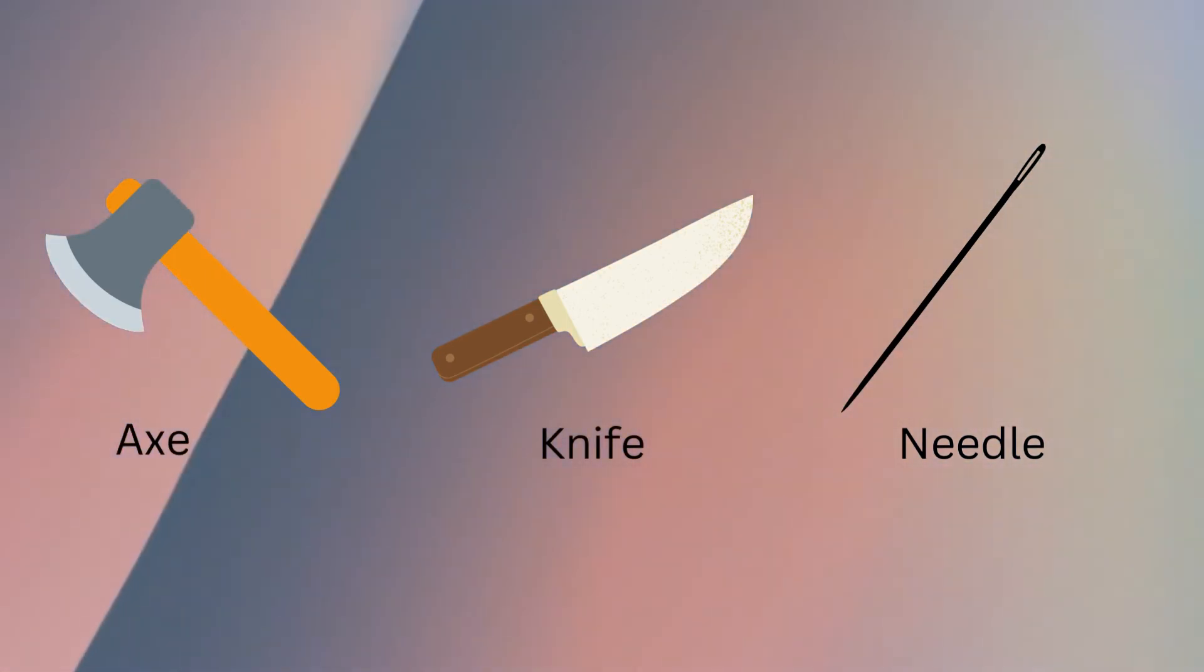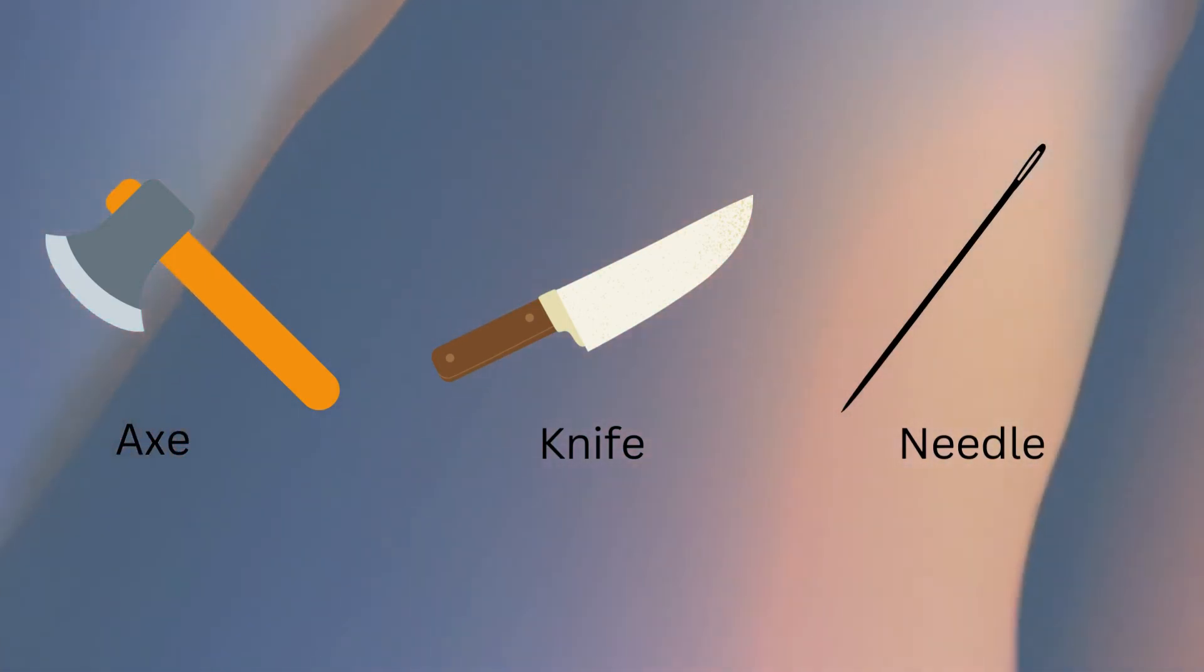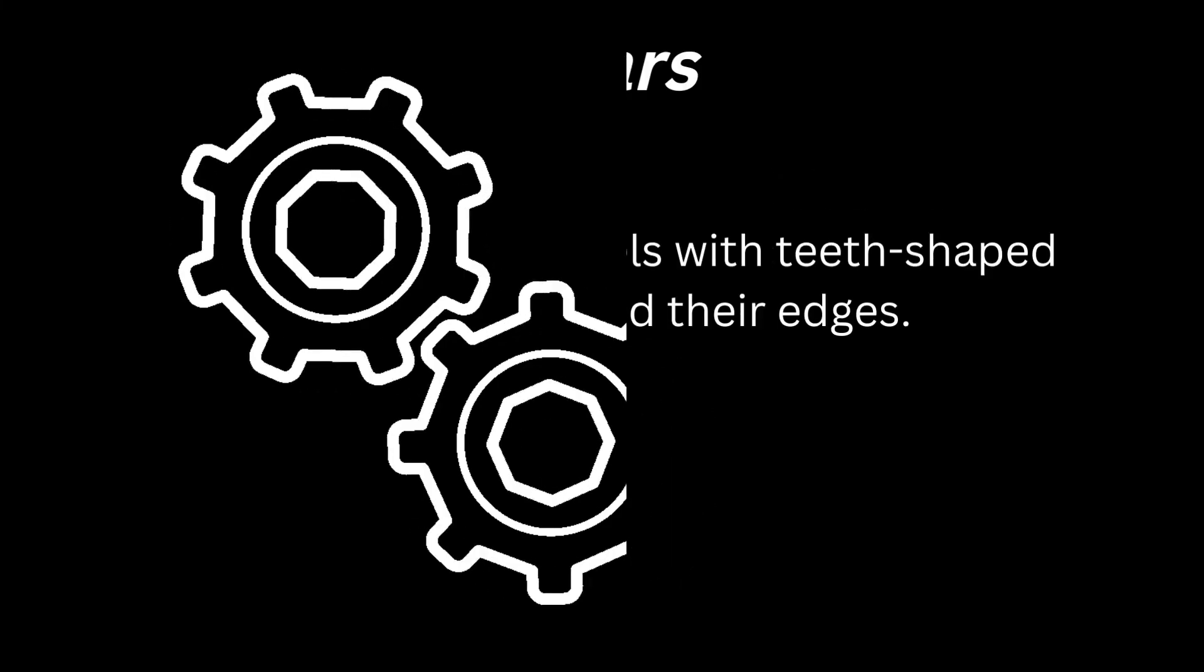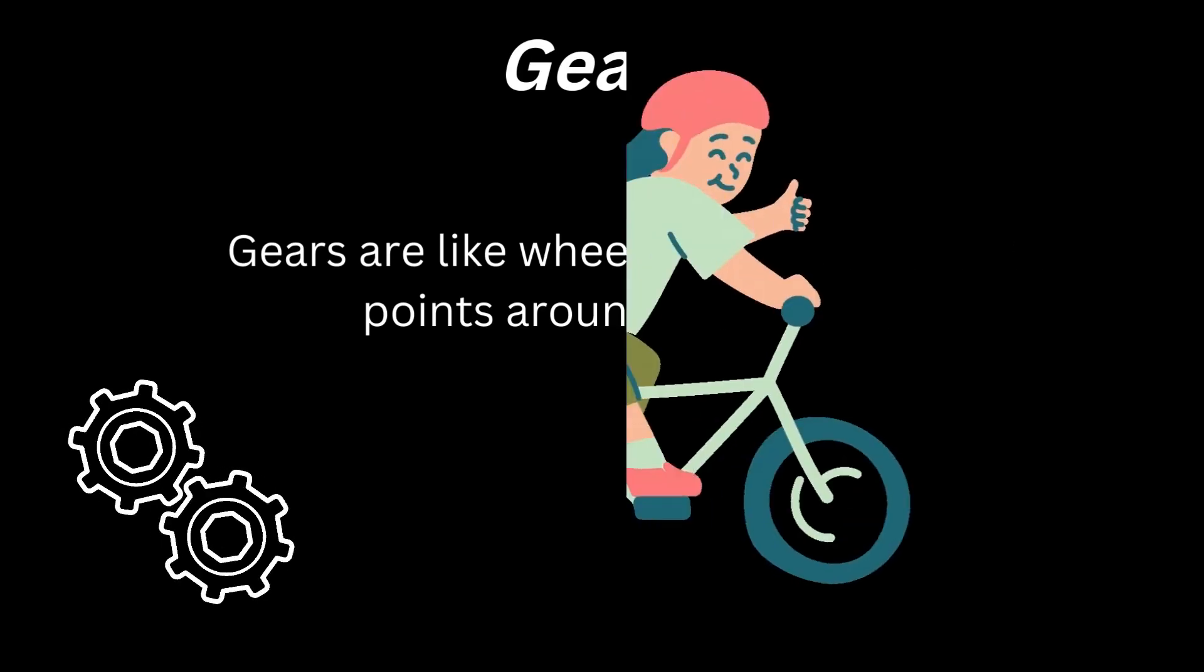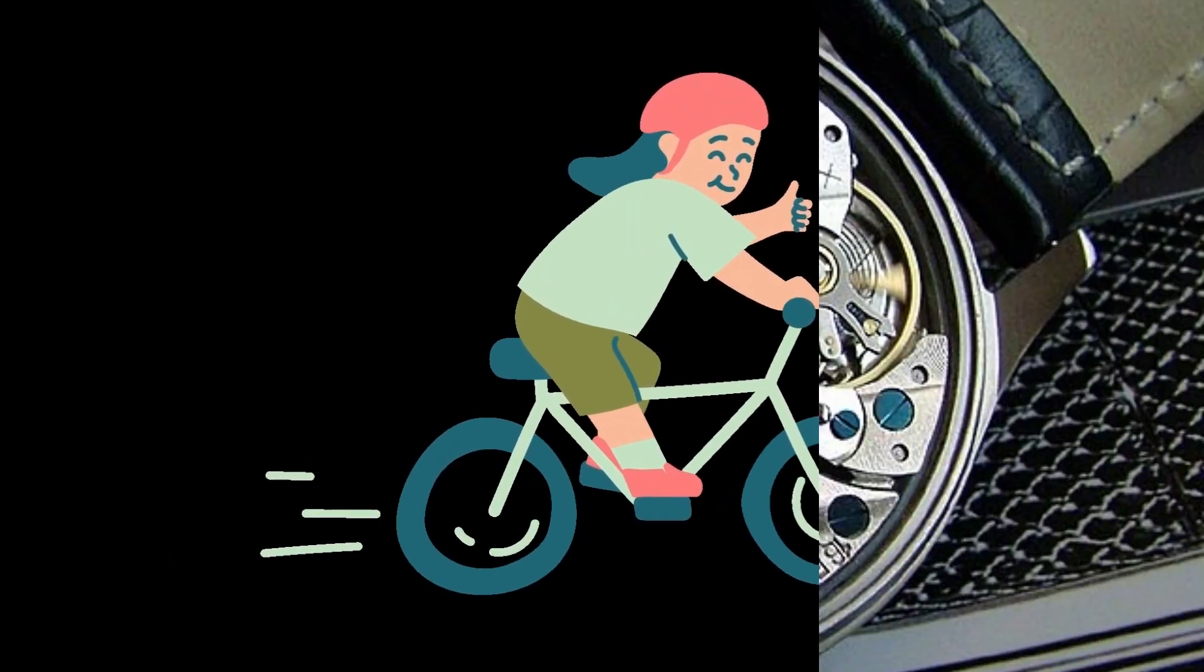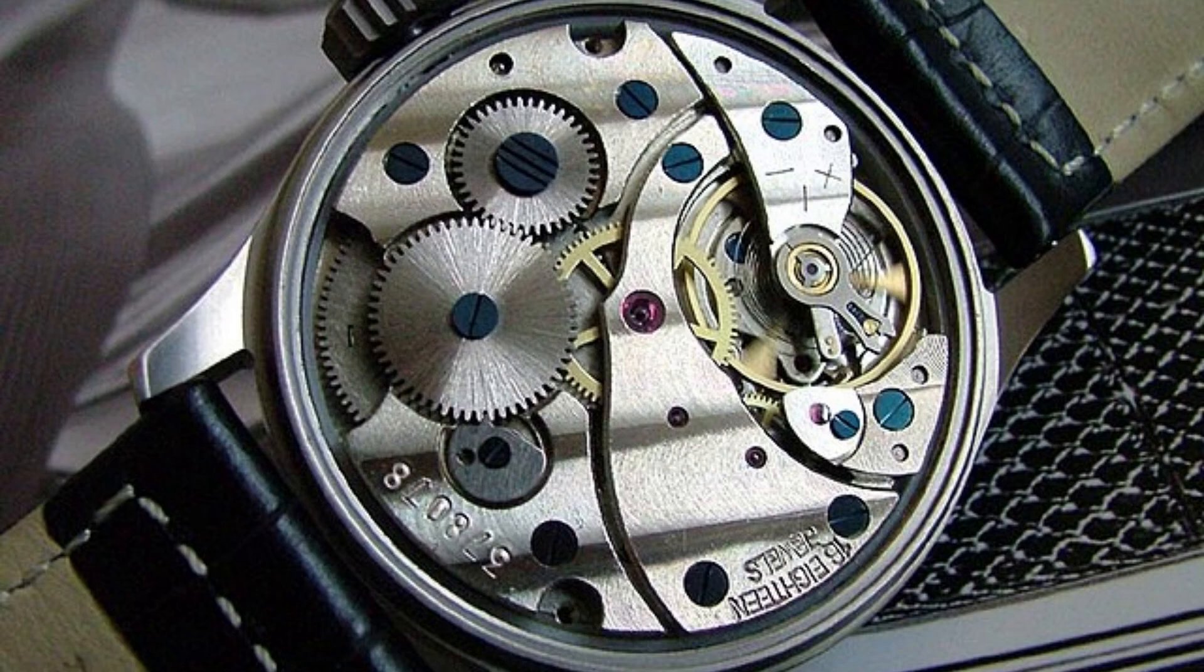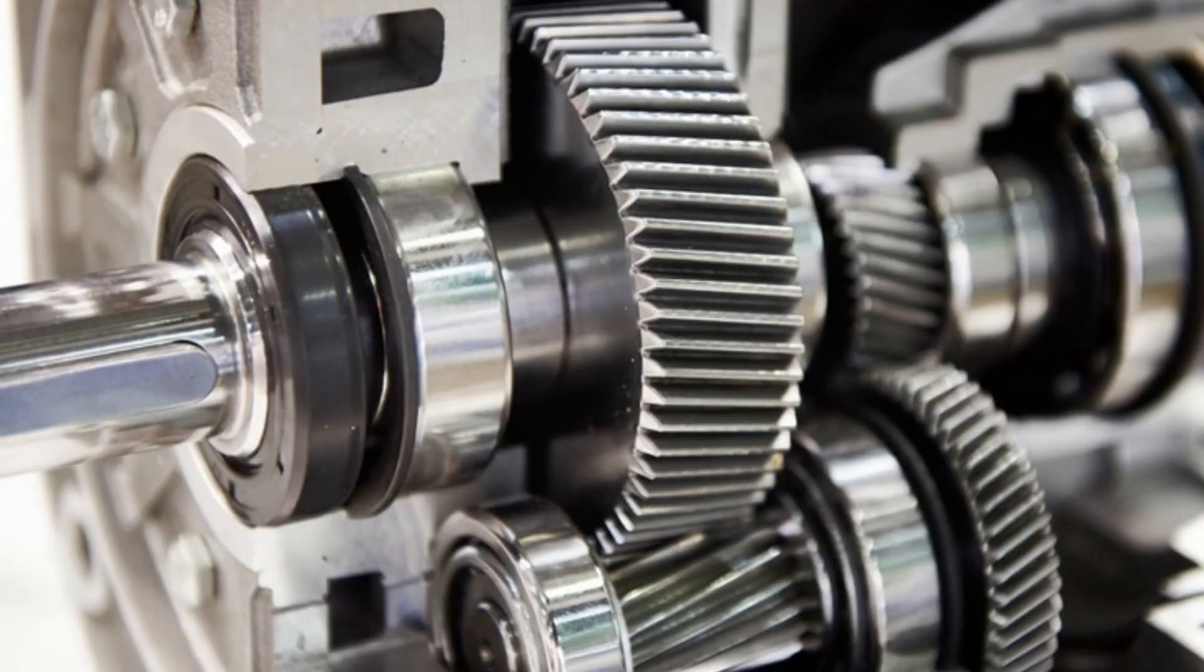Let's discuss gears. Gears are like wheels with teeth-shaped points around their edges. Some objects in which gears are used include a cycle, watches and clocks, and machines.